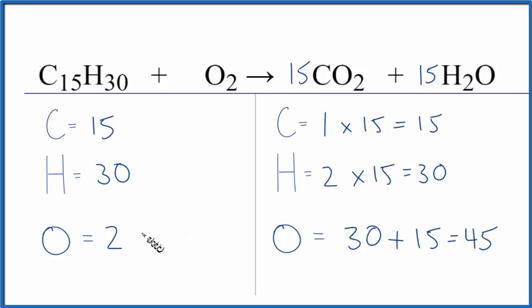Because think about this, 2 times something would equal 45. 2 times 45 over 2, that equals 45. The 2's cancel out. So we could just put 45 over 2, and this equation would be balanced.